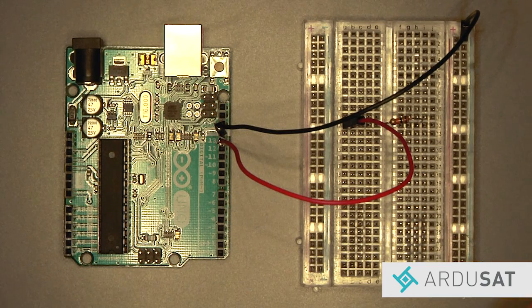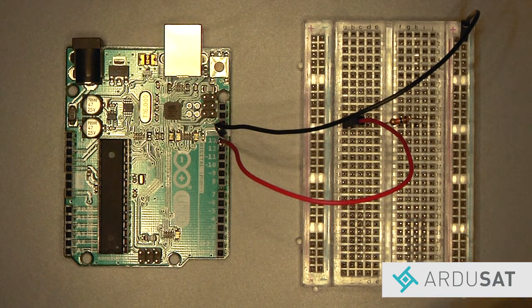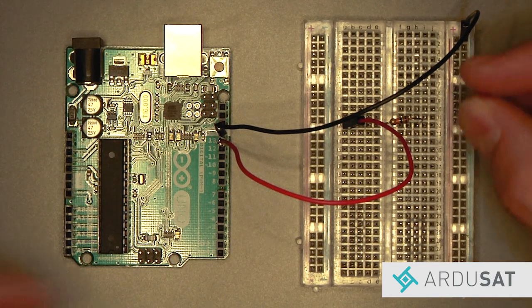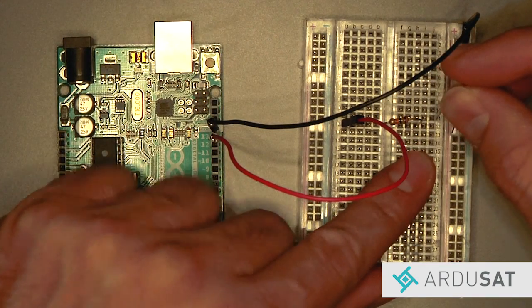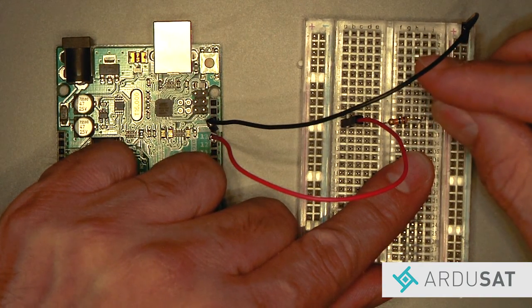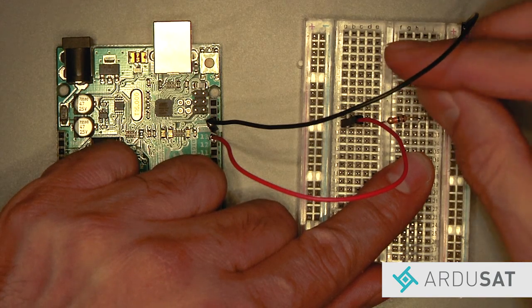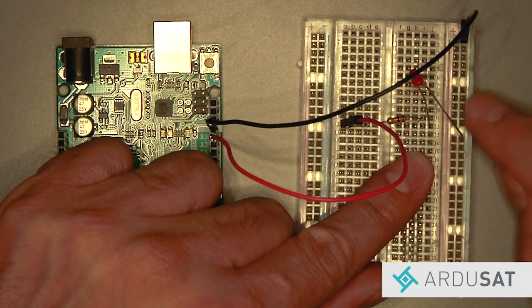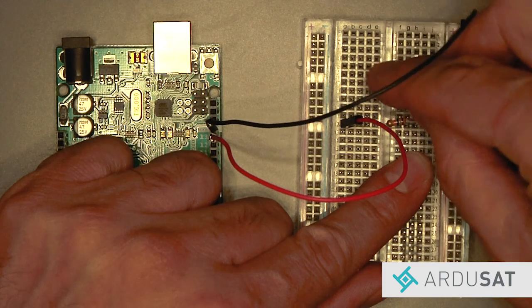Now take an LED, making sure that the positive side is hooked into row 12 column J of the breadboard. Then take the other leg and connect it to the ground rail.